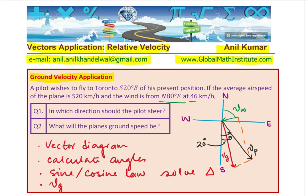You need to provide the angles in the vector diagram. You know the wind is 80 degrees from north, so this angle here is 10 degrees. How can this help you figure out another angle in the triangle? That is what you need to find, and then solve this triangle using sine or cosine law.